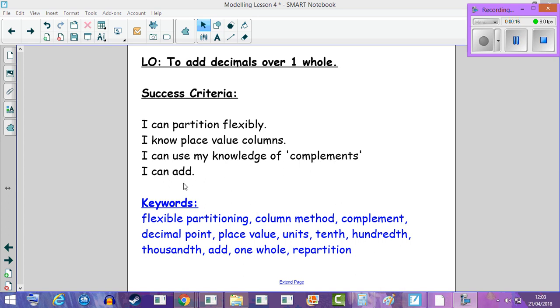We can add. Our keywords are flexible partitioning, column method, complement, decimal point, place value, and here are the place value names, to add one whole. The most important thing to remember when we are adding over one whole, we will be repartitioning.